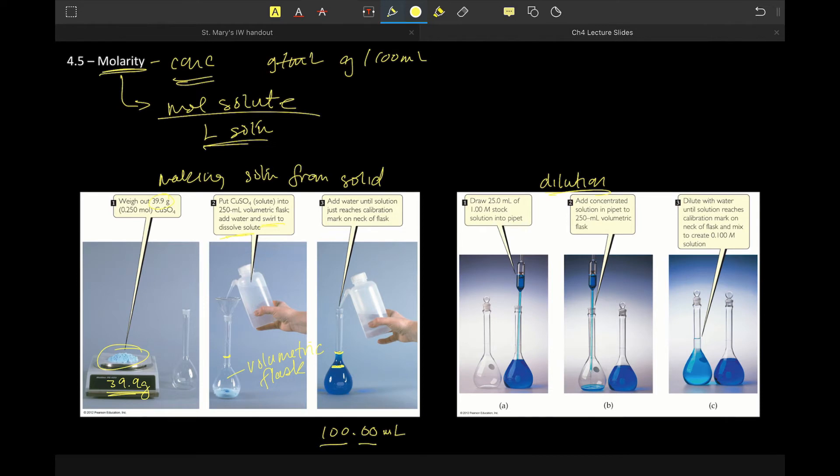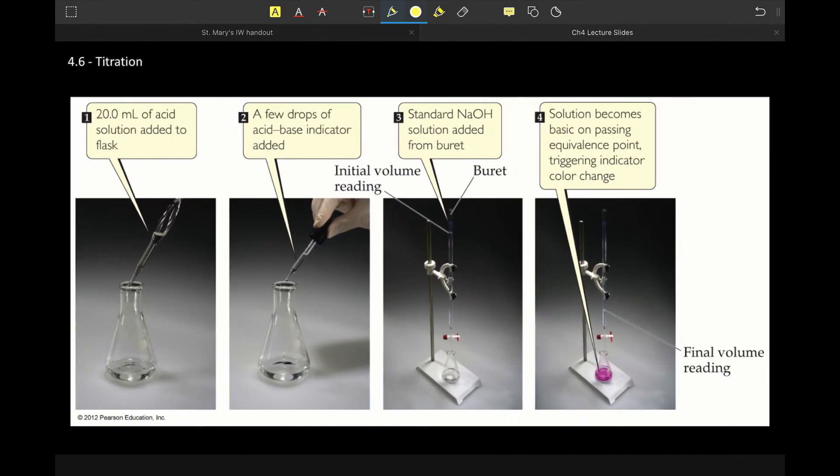But anyway, we would calculate how much stock solution we need, where our stock is the more concentrated version. We would figure out how much of that we need and we would add it to our volumetric flask. Then again, same thing, we would add water, swirl, and then top off to our final volume. Again, depending on the level of significant figures that we need because that will vary.